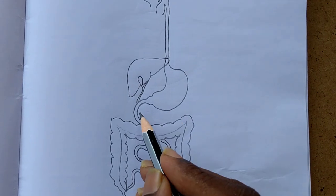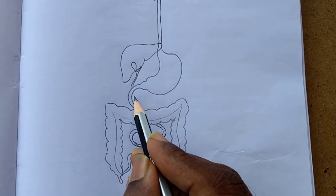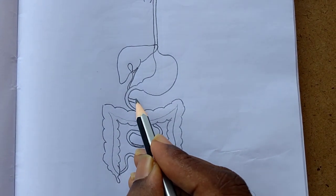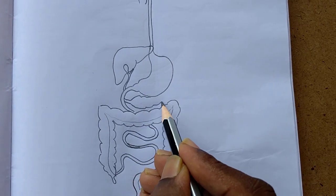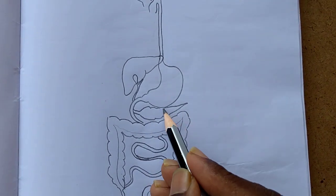This is the small intestine, and from here we have to draw the pancreas, which is roughly a leaf-pipe structure.